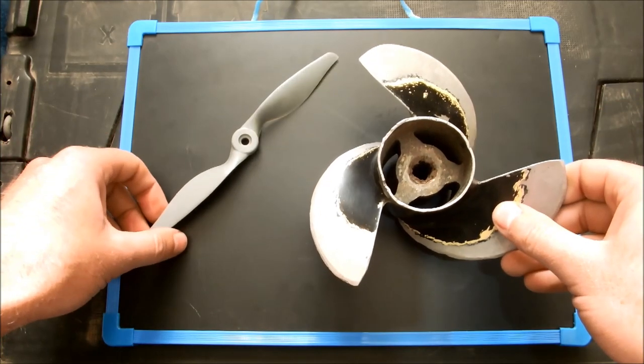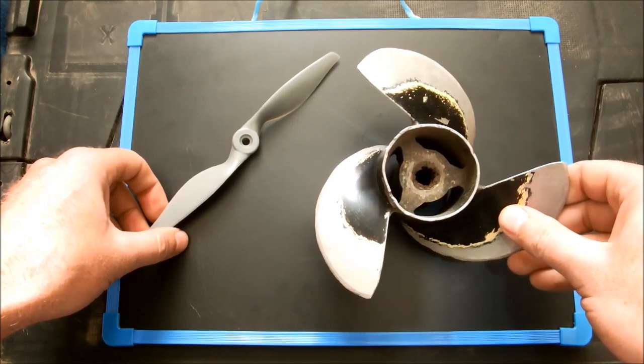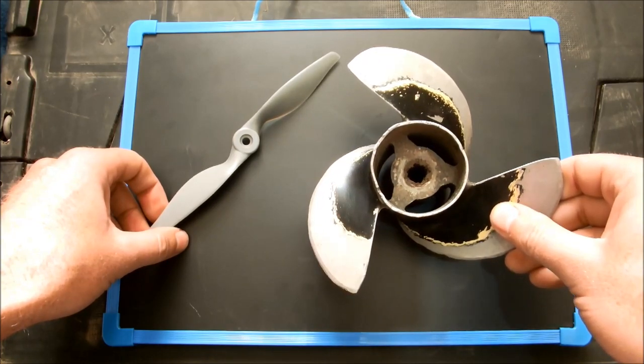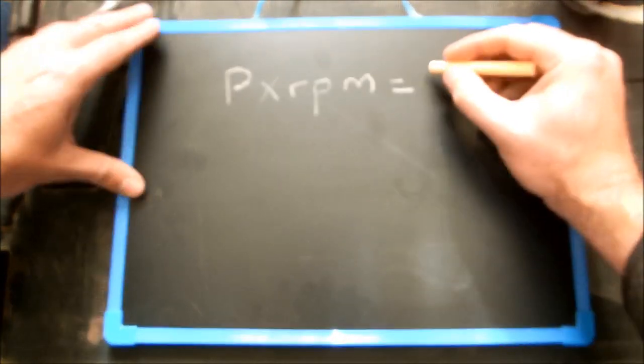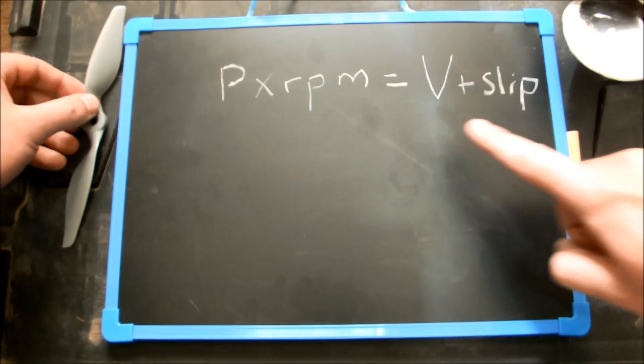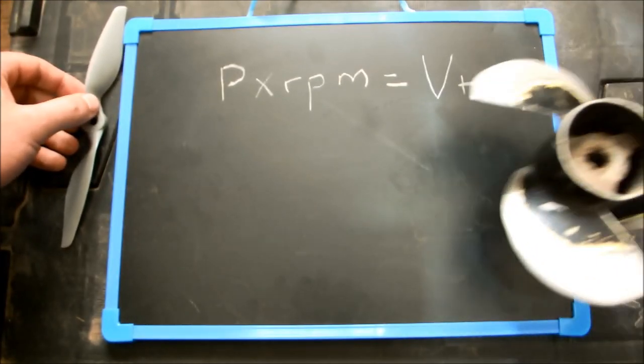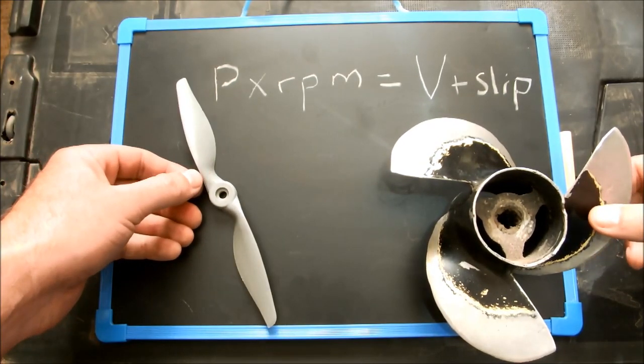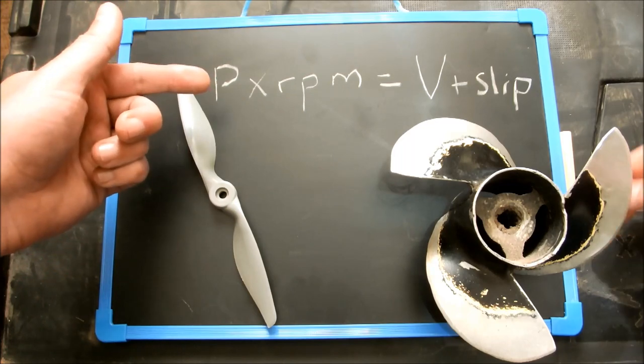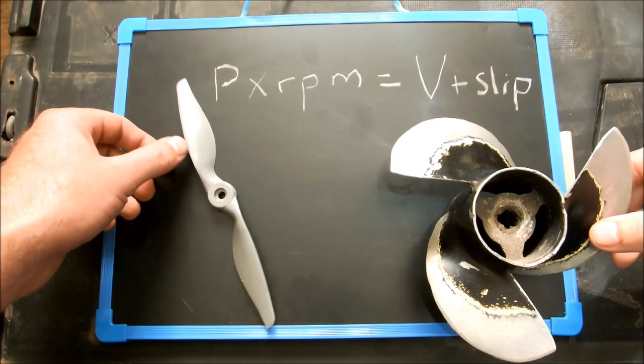If you use the rule of thumb for choosing a propeller size based purely on pitch, RPM and boat speed. Now if this was all that there is to selecting a propeller, then this 8 inch propeller and this 8 inch propeller should provide exactly the same performance if they are used at similar RPM and boat speed. But is that the case?